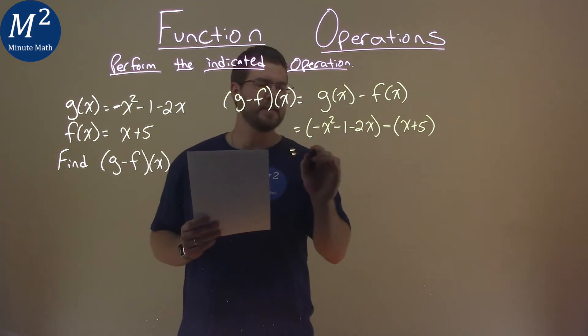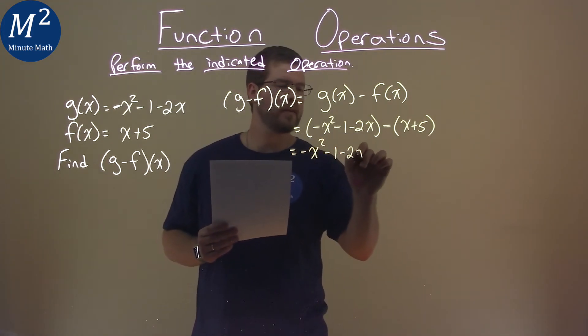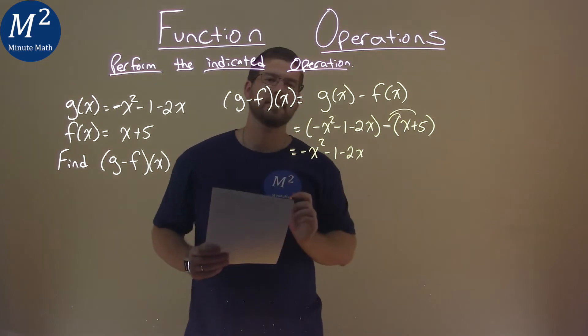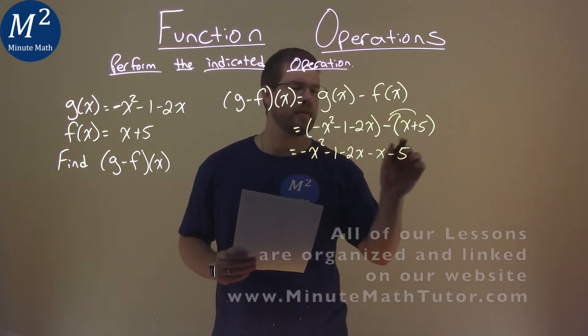So now, let's simplify, negative x squared minus 1 minus 2x. Distribute the minus sign to both parts here, minus x, then a minus 5.